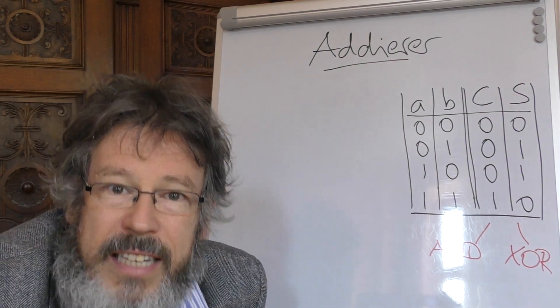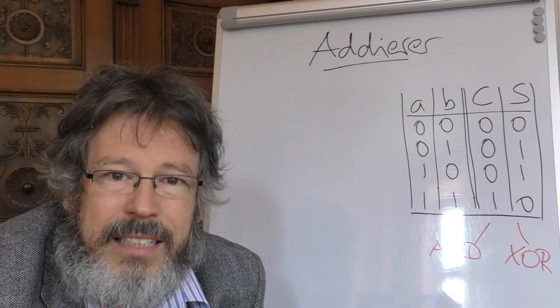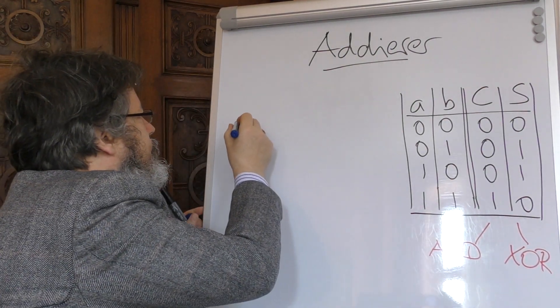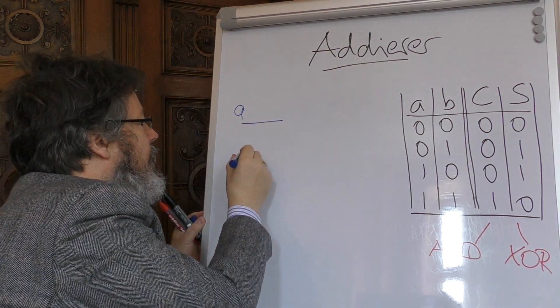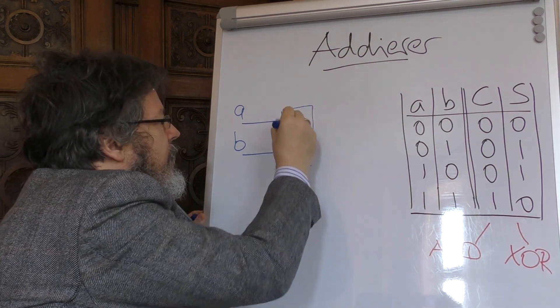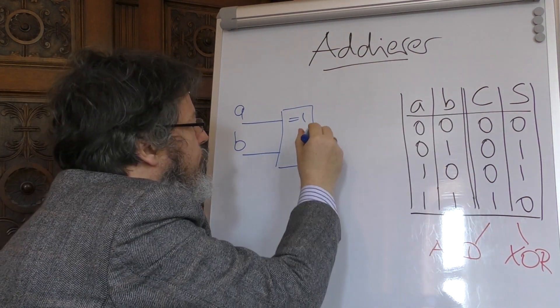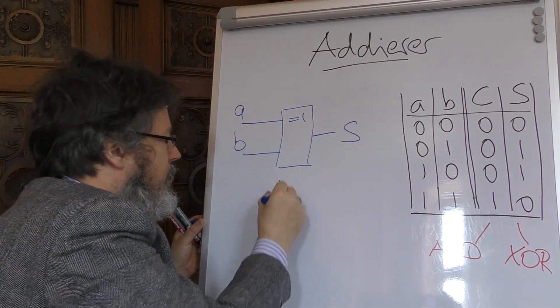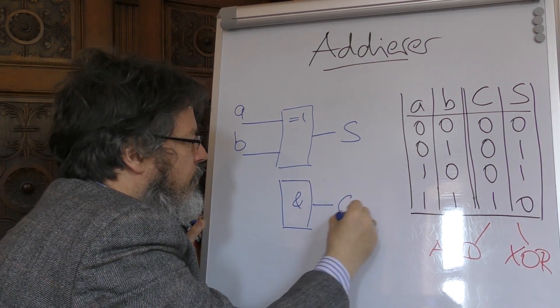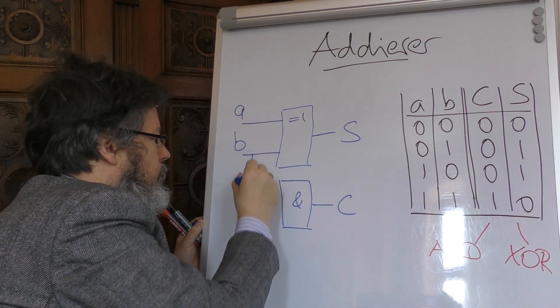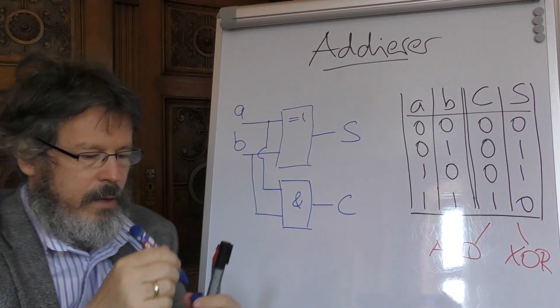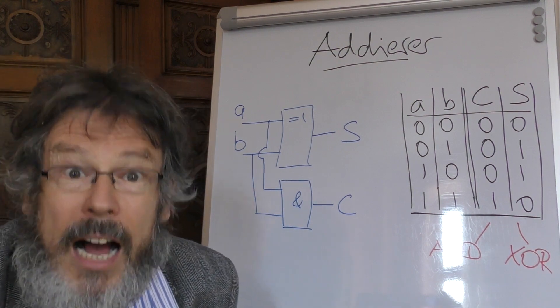Und deswegen können wir jetzt auch sehr einfach mit unseren Gattern, die ja eigentlich aus der Logik kommen, hierfür eine Schaltung angeben. Die sieht folgendermaßen aus. Wir haben zwei Eingänge, A und B. Wir haben zunächst einmal das XOR-Gatter für das Summen-Bit. Und wir brauchen ein UND-Gatter für das Carry-Bit. Und fertig. So etwas nennt man einen Halbaddierer.